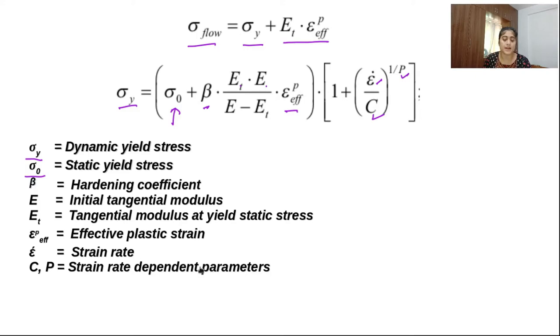This is the strain rate, and these two are the strain rate dependent parameters C and P. So this is the initial tangential modulus, which is also called Young's modulus.